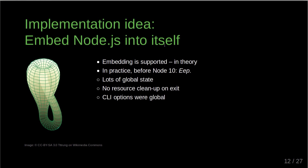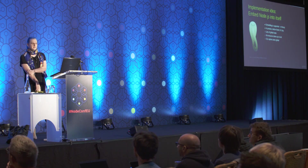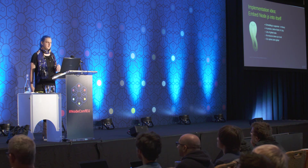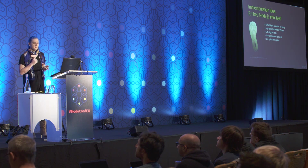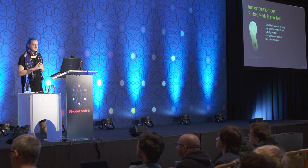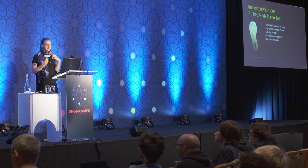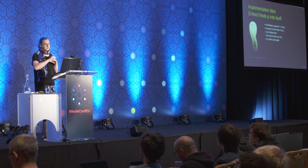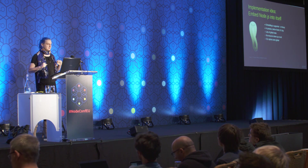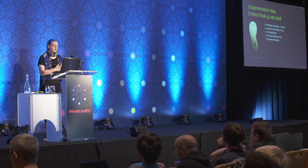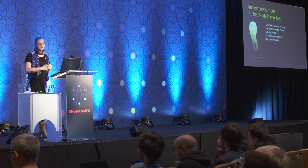In theory, what we want to support is C++ programs that embed Node. It doesn't work great. Before Node 10 — about a year ago — it was even worse. We had a lot of global state. Node.js didn't really clean up after itself when it exited the process. One example of particularly bad global state is CLI options — our CLI parser was essentially a list of global variables. Not great.